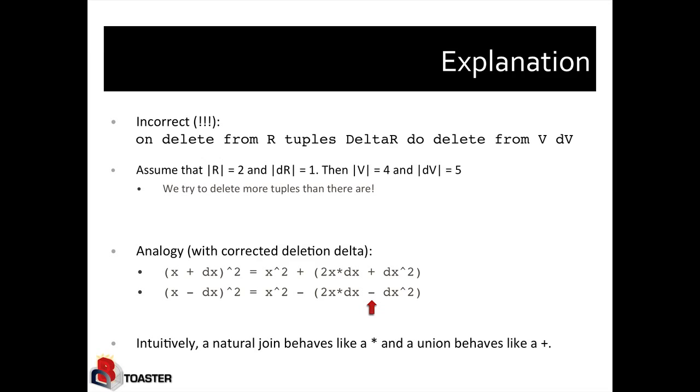So that's a very straightforward analogy with basic calculus. Suppose x is a real number and dx is the change to it. And I want to square that result. So we initially have x squared as our view. And after the change, we would like to have (x + dx) squared. And of course, I can just reformulate (x + dx) squared as x squared plus the delta of the view, which is 2x dx plus dx squared.